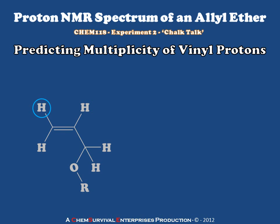Let's start with the proton highlighted in blue. This particular proton will be coupled to two other protons within the molecule — its geminal neighbor and its cis alkene neighbor. The cis coupling should be about 10 hertz, and the geminal coupling should be about 2 hertz.